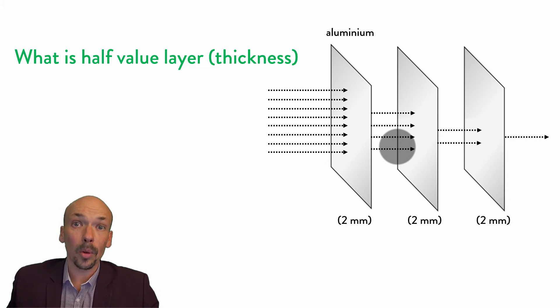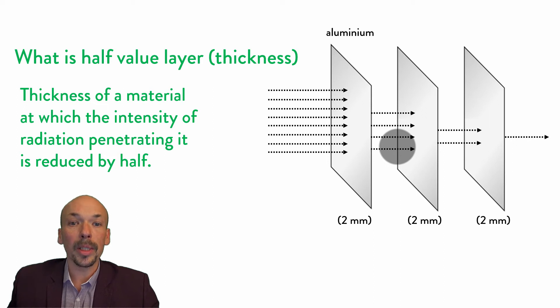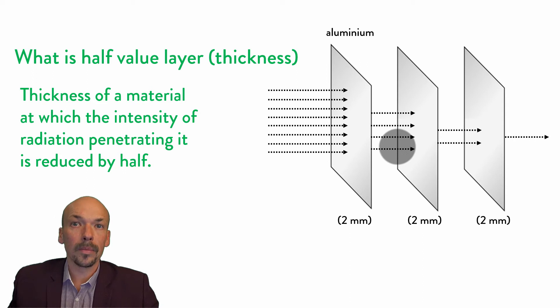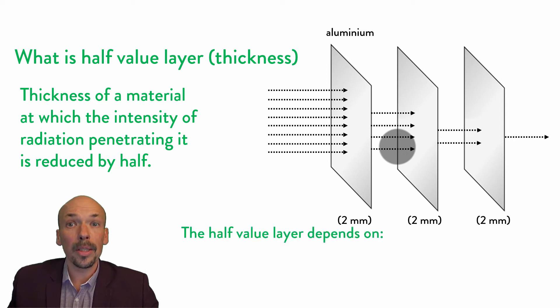The half value layer or the half value thickness is the thickness of a material at which the intensity of radiation penetrating it will be reduced by half. This is not a constant.